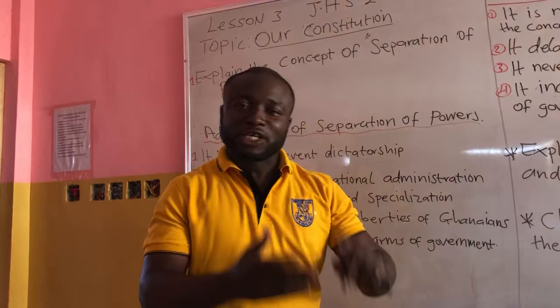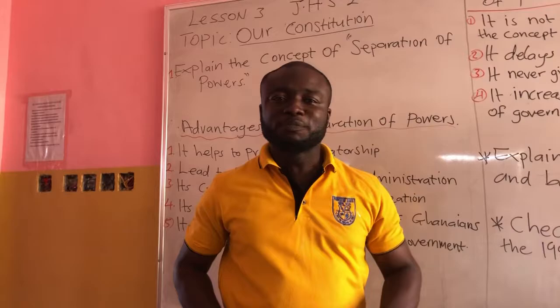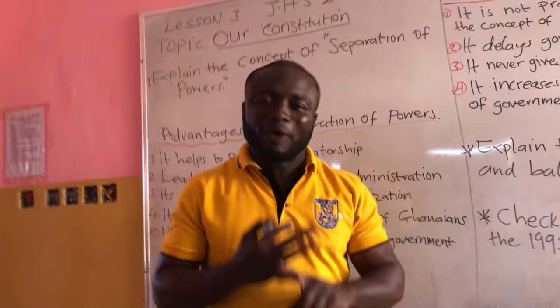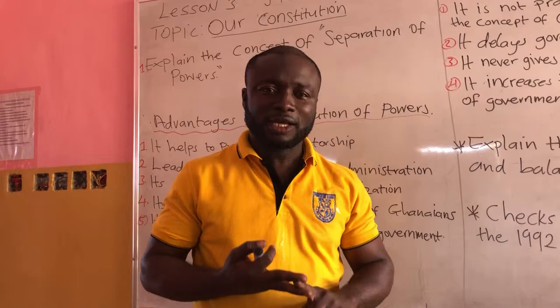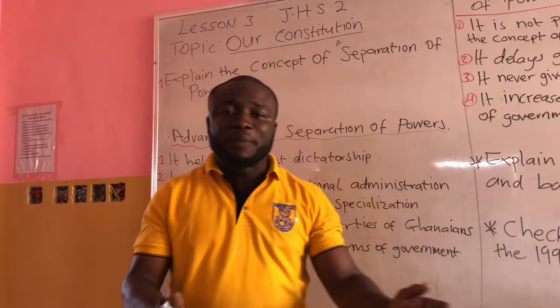The executive, judiciary, and the legislature are to work independently so that no one arm of government becomes more powerful than the other. The constitution says that the function of the executive must be performed by the executive, the function of the legislature must be performed by only the legislature, and the function of the judiciary must be performed by only the judiciary. The constitution has spread out the functions of the three main arms of government, meaning they are all independent on their own.